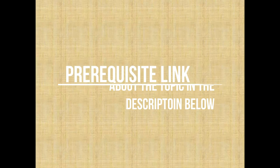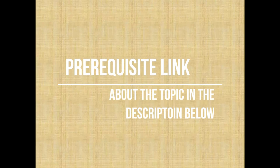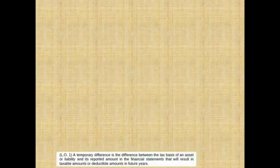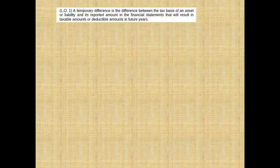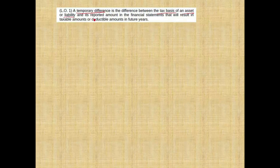Let's start with the first sets of questions. I'm going to ask you a list of true/false to make sure you understand the most basic concepts. Pause before each question, try to answer it, then listen and see if you got it right. First true/false: a temporary difference is the difference between the tax basis of an asset or liability and its reported amount in the financial statement that would result in a taxable or deductible amount in future years. The answer is yes, this is true — that is exactly what a temporary difference is.